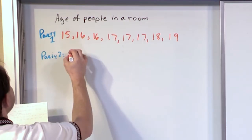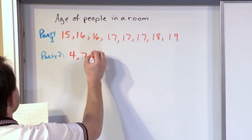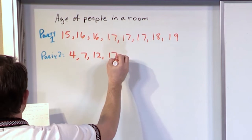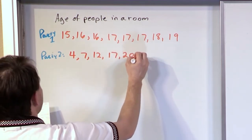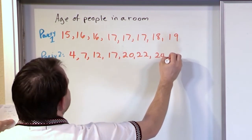So again, I'm going to choose 8 people at random. I get a 4-year-old, a 7-year-old, a 12-year-old, 17, 20, 22, 24, and 28.